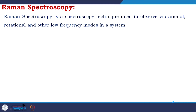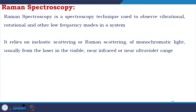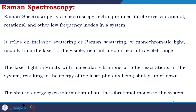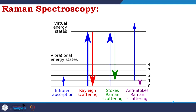Raman spectroscopy is a technique used to observe vibrational, rotational, and other low-frequency modes in a system. It relies on inelastic scattering of monochromatic light — usually from a laser in the visible, near infrared, or near UV range. The laser light interacts with molecular vibrations resulting in the energy of laser photons being shifted up or down. In the infrared level there is elastic Rayleigh scattering, and for Raman there are Stokes and anti-Stokes lines.